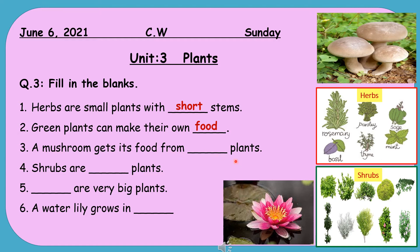Mushroom is not green in color, so it cannot make its own food. It gets its food from dead plants. Number 4: Shrubs are _____ plants. Yes, shrubs are bushy plants with lots of branches and leaves and thorns also.